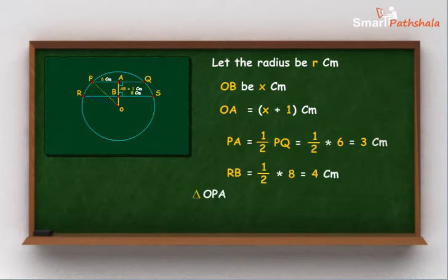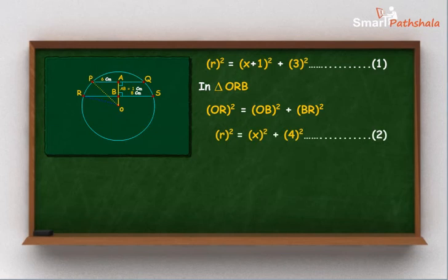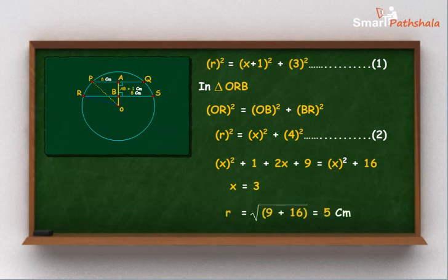In triangle OPA, OP square is equal to OA square plus AP square, or r square is equal to x plus 1 whole square plus 3 square. Similarly, in triangle ORB, OR square is equal to OB square plus BR square. On solving both equations, we get that x is equal to 3. On substituting the value of x in equation 2, we get r as 5 cm.